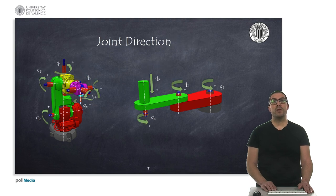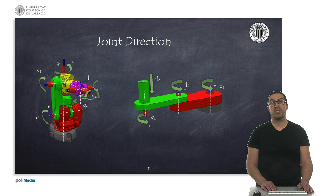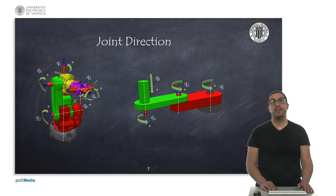Revolute joints will rotate in one specific direction with a positive increase in their position, while prismatic joints will advance in one specific direction as their position value increases. These directions are important to know in advance in order to set the direction of the Z axis, as we will see later. If this direction is not known, we can freely choose this direction arbitrarily.